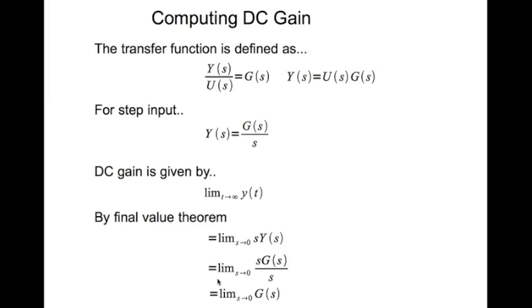This is assuming that g(s) is stable — that is, all the poles of g(s) are in the left half of the complex plane. That means all the poles of g(s) have negative real parts.